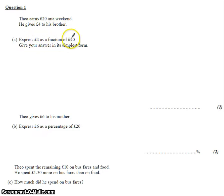Express £4 as a fraction of 20. Nice and simple to start with. 4 as a fraction of 20 is written like that. Now that will get you a first mark because you've written a fraction, but it says give your answers in its simplest form.